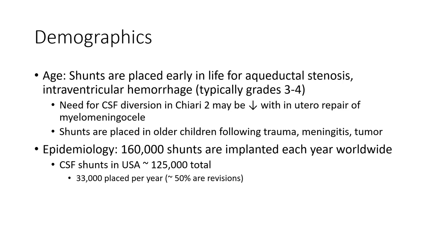Demographics: shunts are placed early in life for aqueductal stenosis, intraventricular hemorrhage, hydrocephalus grade 3 and 4, and may decrease with in-utero repair of myelomeningocele. Shunts are also placed in children suffering from trauma, meningitis, and tumor.